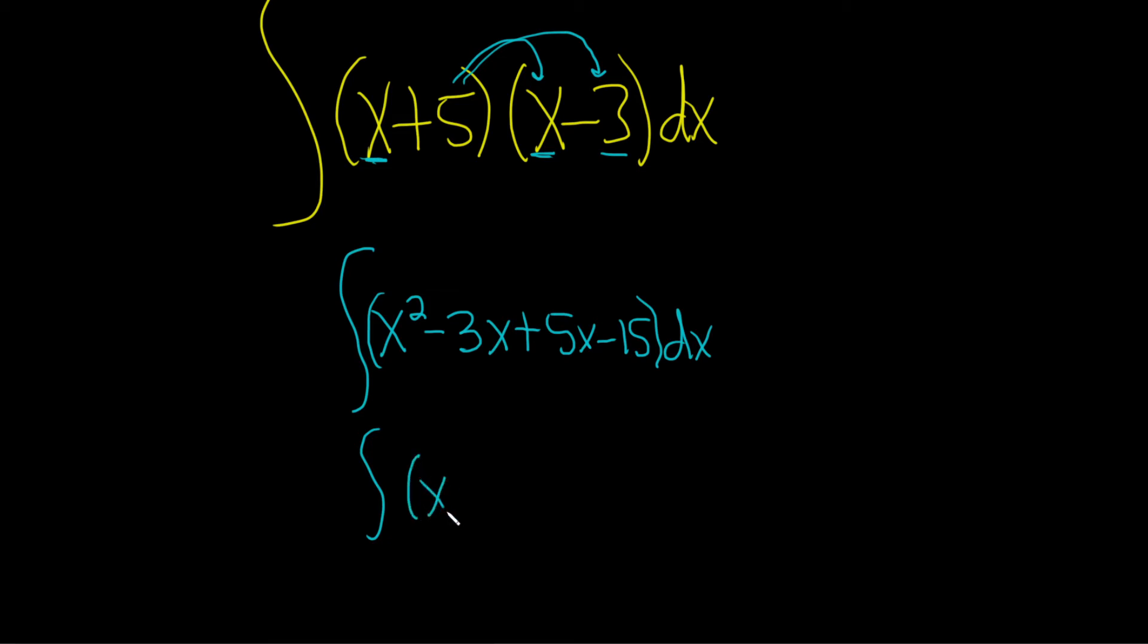So we have the integral of x²; -3x plus 5x is going to give us +2x, and then we have -15, dx.